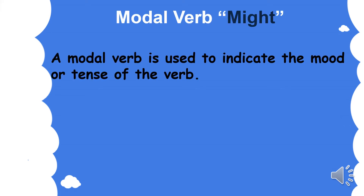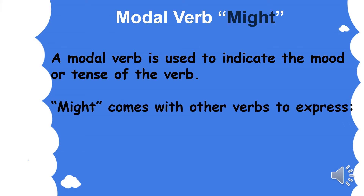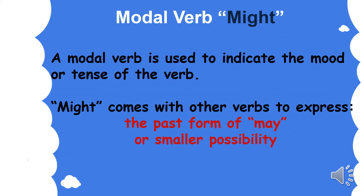So that was the modal verb may. What about might? A modal verb is used to indicate the mood or tense of the verb. The modal verb might comes with other verbs to express, first, the past form of may, and also a smaller possibility. Let's explain each one.